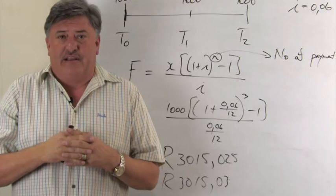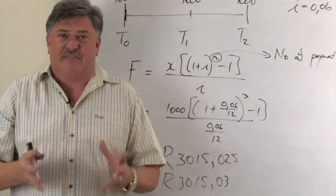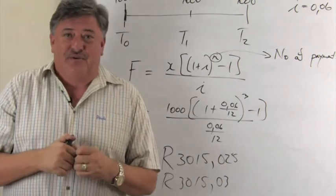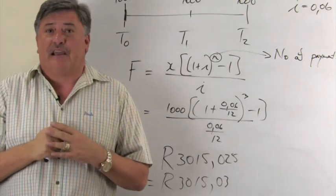But of course, the compound interest in annuities is a clumsy method. So for future value annuities, we are going to use this particular formula.